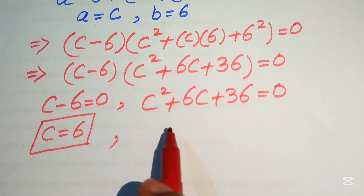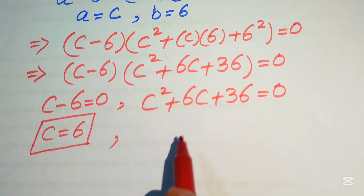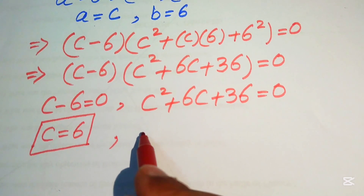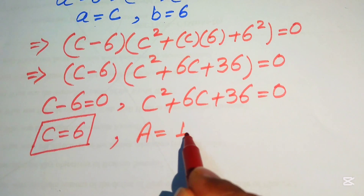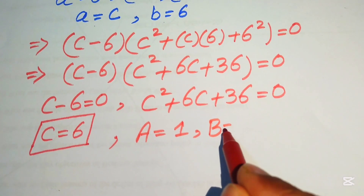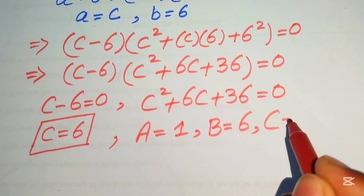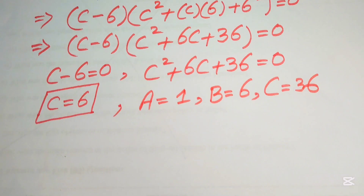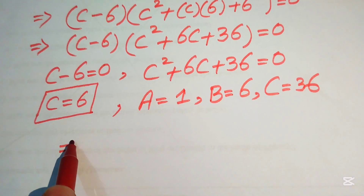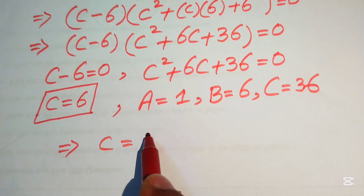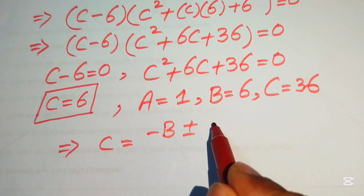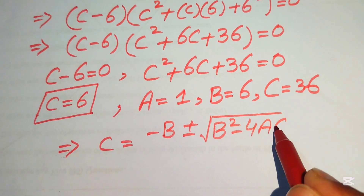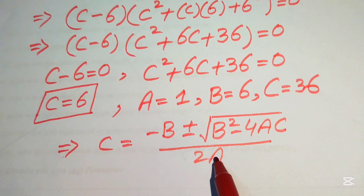In the second case, we have a quadratic equation, which we solve using the quadratic formula. The coefficients are: capital A equals 1, capital B equals 6, and capital C equals 36. The quadratic formula is: c equals negative B plus or minus the square root of (B squared minus 4AC), divided by 2A.